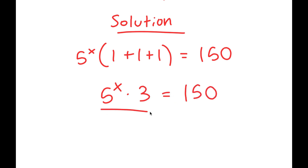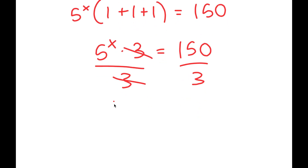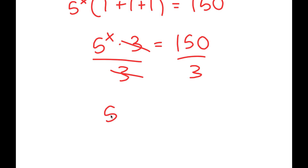Now I'm going to divide both sides by 3. These two cancel out, and I get 5 to the power of x is equal to 50.